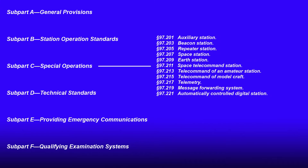Then we come to Subpart C: Special Operations, such as auxiliary stations, beacon stations, repeater stations, space stations, earth stations, space telecommand station, telecommand of an amateur radio station, telecommand of a model craft, telemetry, message forwarding system, and automatically controlled digital station.